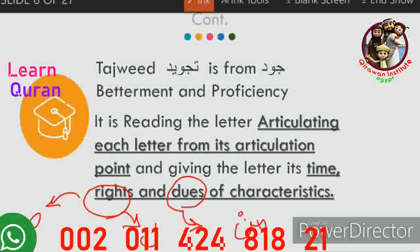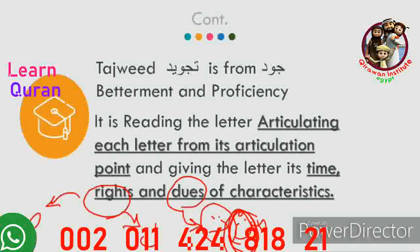The dues of the letters are characteristics that come about because of the sequence of letters. For example, when we have a noon followed by a ta, the noon's characteristics may change because of the letter that comes after. This same noon may change when the following letter changes. These are dues of the letters — characteristics that may change according to the letter sequence or order in recitation.